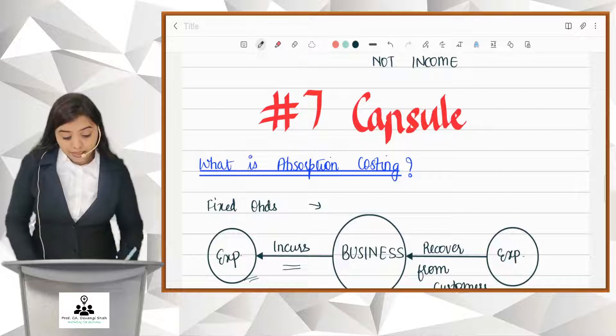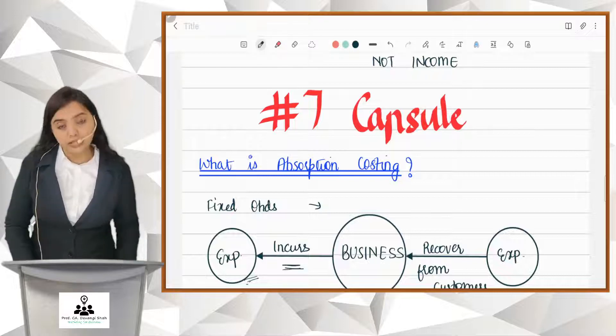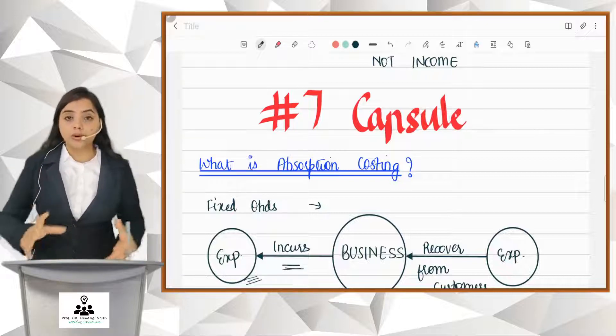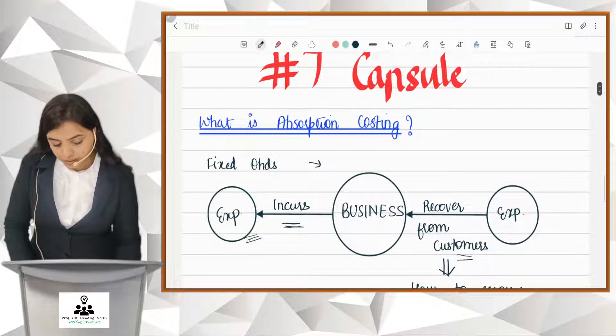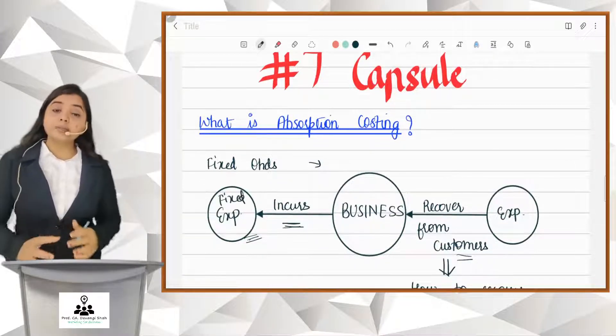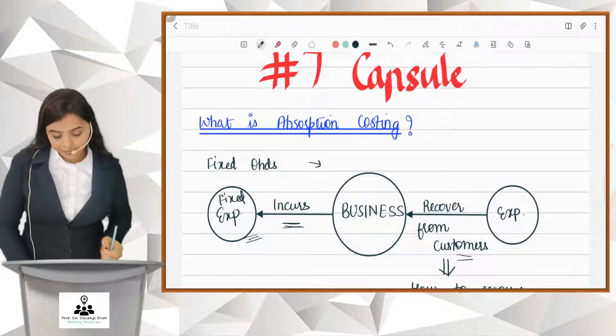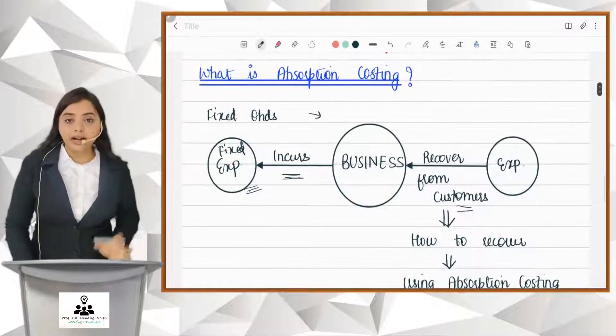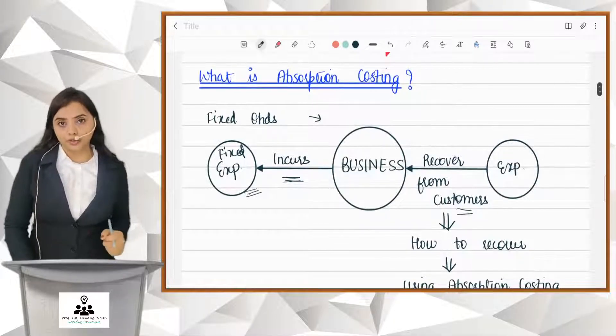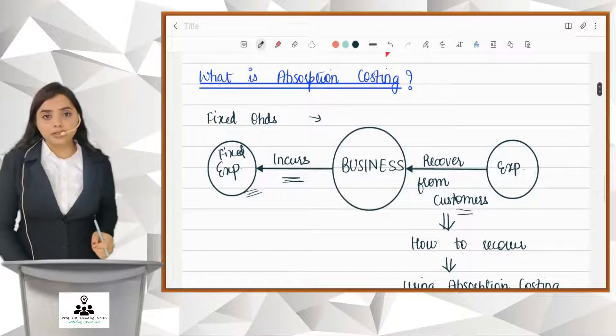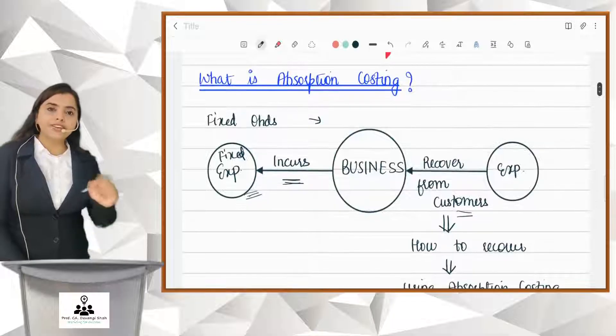Friends, businesses incur expenses and we have to recover them from customers. When fixed expenses are incurred, how will you recover them from the customer? That is where your absorption costing comes into picture. Absorption costing helps us understand how fixed overheads are to be charged to the product and recovered from customers.